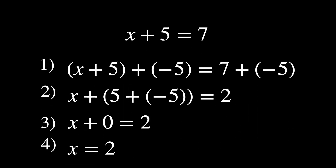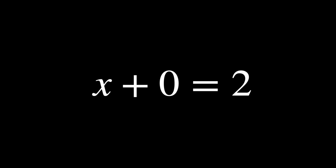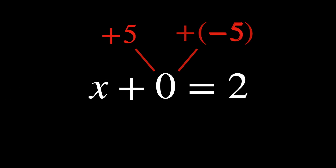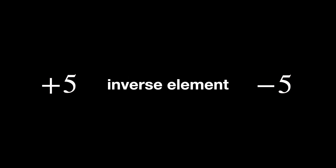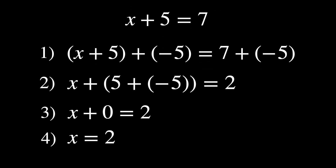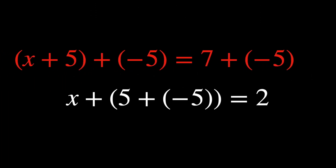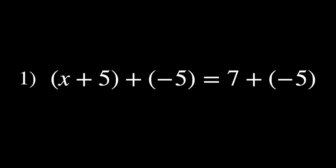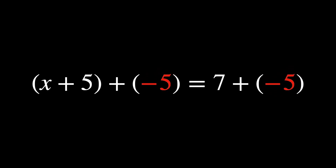When we return to step 3, we combine 5 and minus 5 to form 0, which is necessary to isolate x. Thus, it is absolutely critical that 5 has an inverse element. Inverses are usually shown as minus a or a to the power of minus 1, depending on the operation. In step 2, the order of addition is changed — this is associativity, meaning that no matter how you group the elements when performing the operation, the result will be the same. Finally, in step 1, we introduce the integer negative 5. The set of integers is closed under addition, meaning that any addition of two integers will always result in another integer. All of this together defines what a group is.